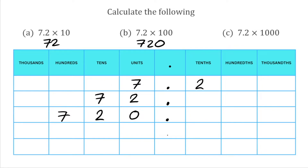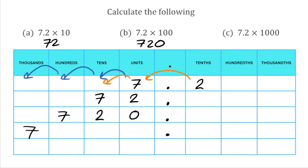For this last question I've got 7.2 multiplied by 1000. That means we've got to move all the digits three places to the left because there are three zeros in 1000. Starting with 7.2, our 7 moves three spaces to the thousands column, and our 2 moves three spaces to the hundreds column. We don't have any tens or units, but we still need placeholders, so we put a zero in each of those columns. So our answer to this question is 7,200.